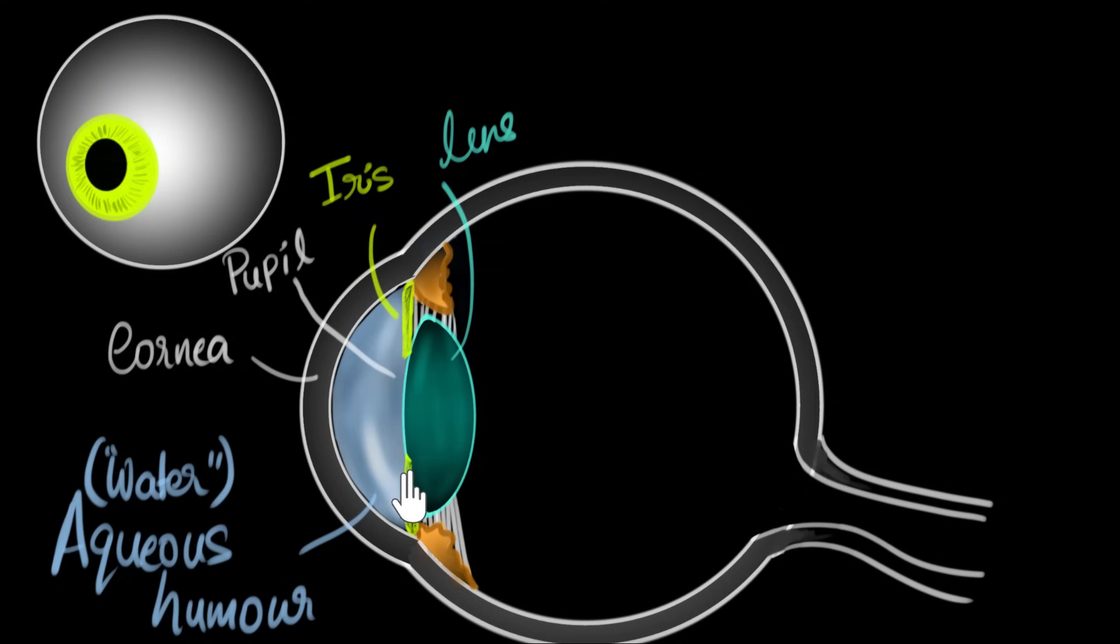And so whenever you want to concentrate on a specific object, their job is to make sure that the light from that object gets focused right at the back part of our eye.